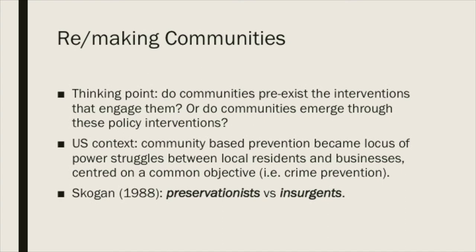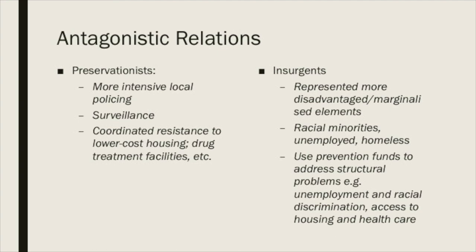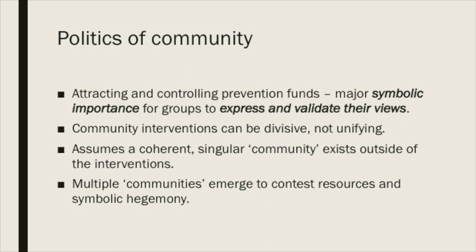Scogin classified community participants into two categories: preservationists and insurgents. The preservationists tended to be more conservative, insisting on intensive local policing, surveillance measures, and coordinated resistance to lower-cost housing and drug treatment facilities. Whereas the insurgents represented more disadvantaged and marginalised elements of society and wanted to use prevention funding to address structural problems like unemployment, racial discrimination, and access to housing and healthcare. Attracting and controlling prevention funding became of major symbolic importance, and community interventions can be divisive rather than unifying — multiple communities emerge to contest resources and symbolic hegemony.